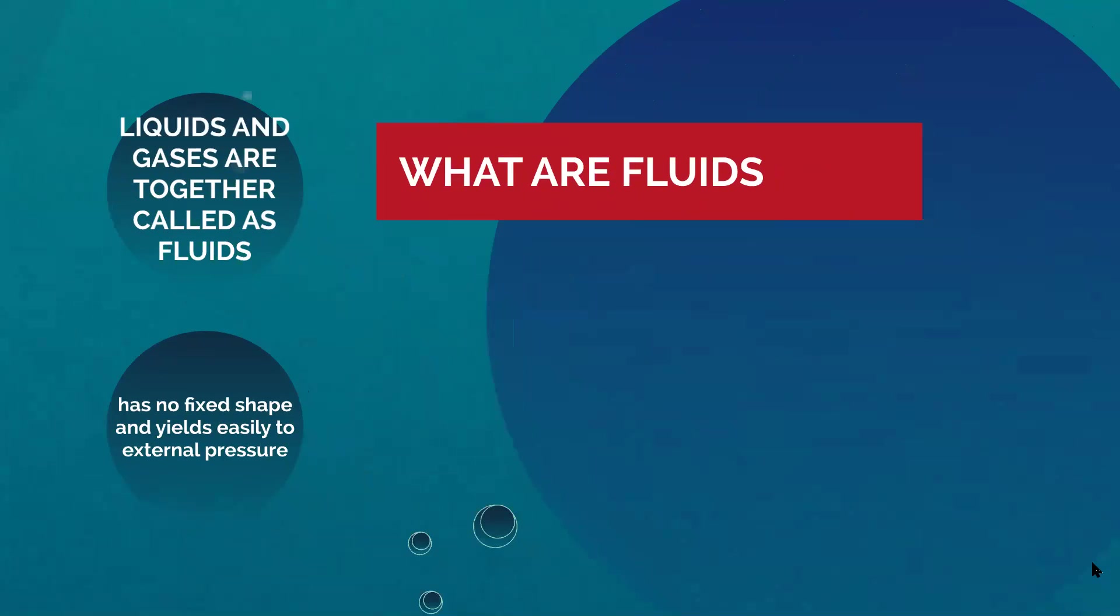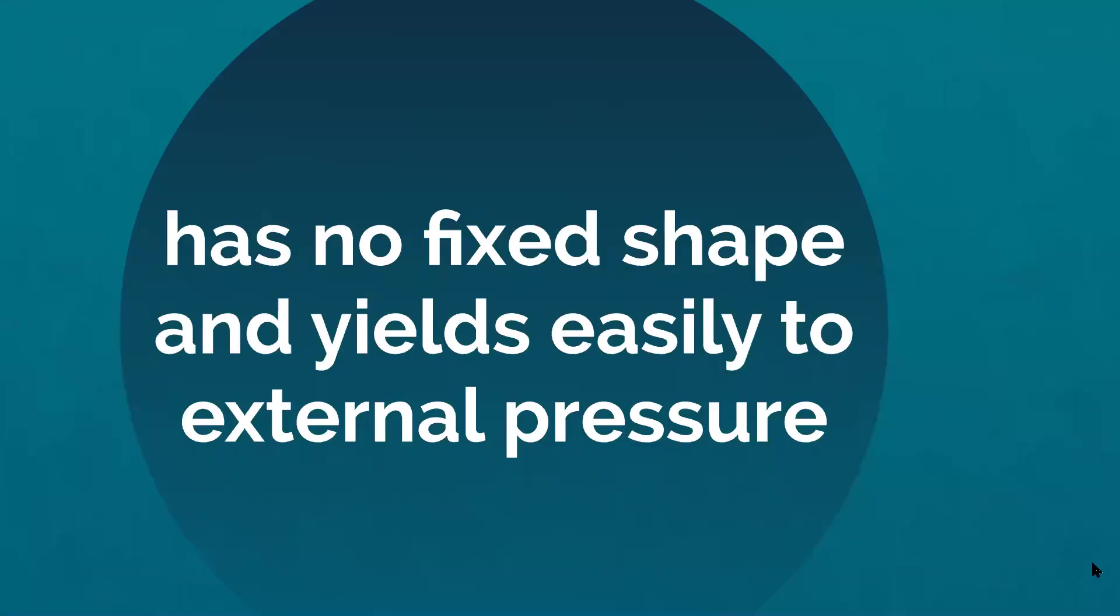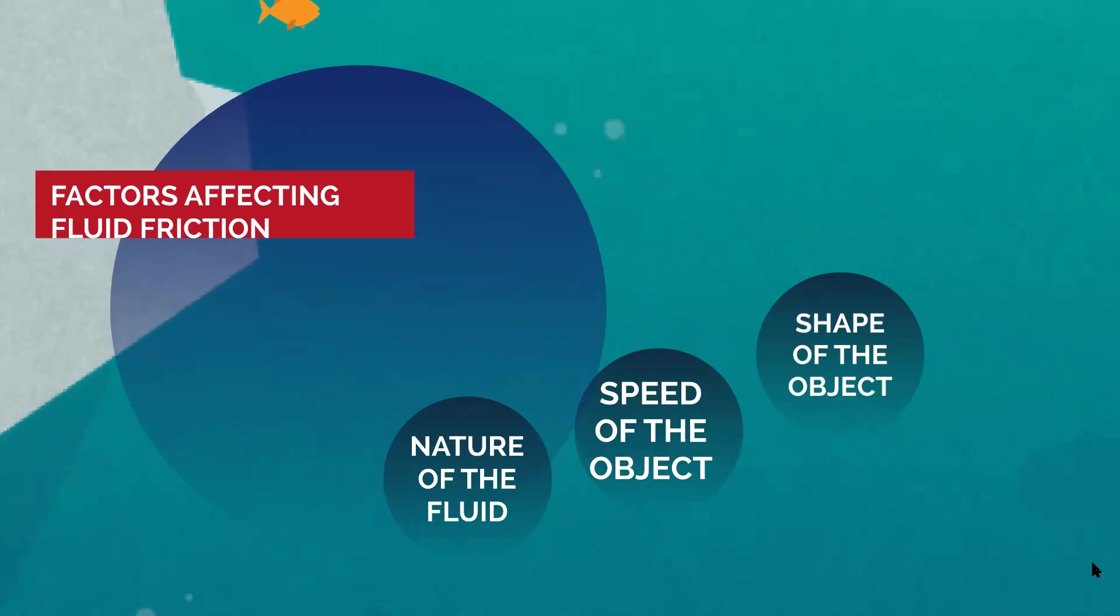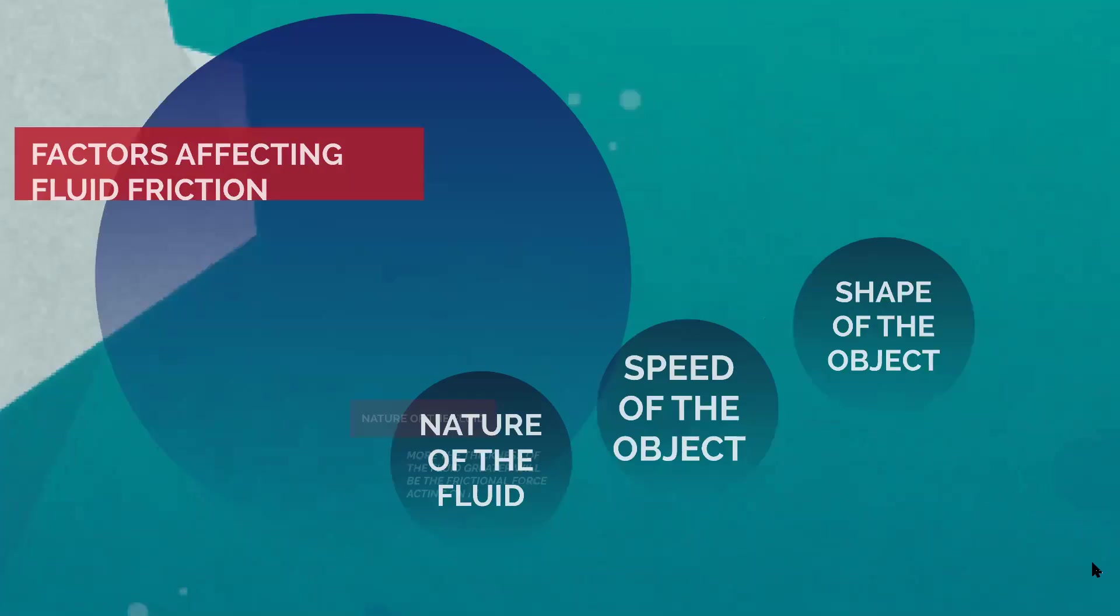What are the factors on which the fluid friction depends? There are three major factors on which fluid friction depends. One is nature of the fluid, second one is speed of the object, and third one is shape of the object. Let us go quickly into each of these factors. How does it vary from one object to other object?